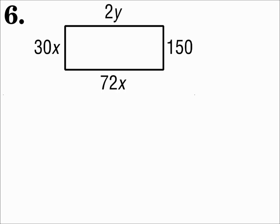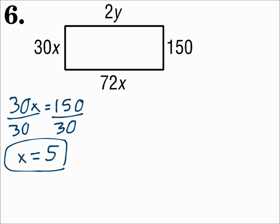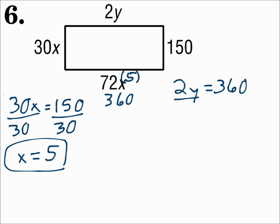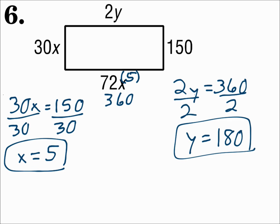Number six. In this parallelogram, we're dealing with the sides, and opposite sides are congruent. So I can say that 30x equals 150. Divide both sides by 30 and x is 5. The other pair of opposite sides is also congruent, but I don't want to say 2y equals 72x. Instead, substitute 5 in for x, which gives you 360 for the bottom side. Opposite sides are congruent, so 2y equals 360. Divide both sides by 2, and y is 180.